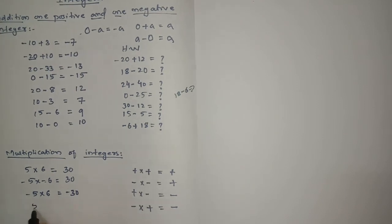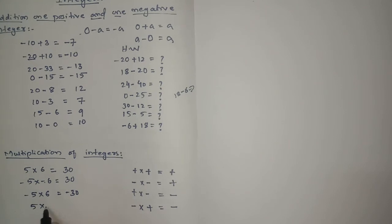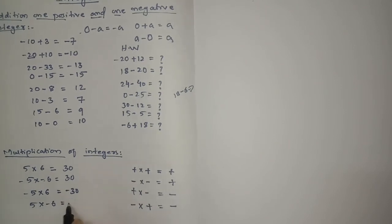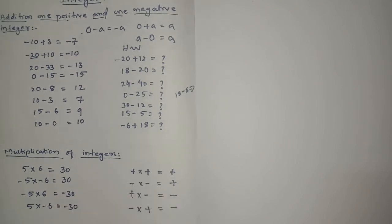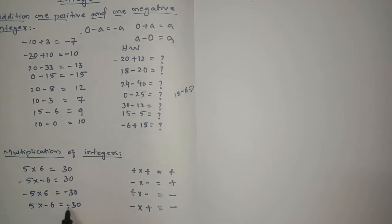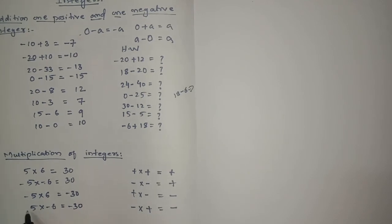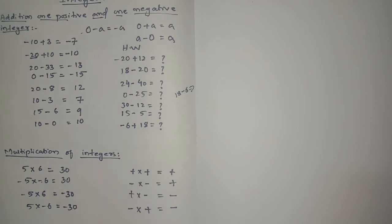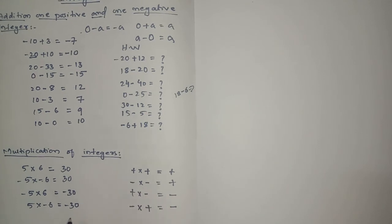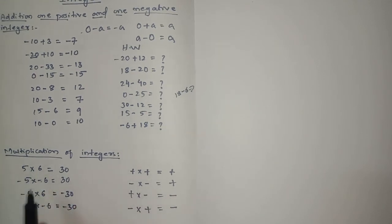If it is 5 into minus 6, the result will be minus 30 — plus into minus is minus. So these are the four cases of sign multiplication in integers. I hope you understood.